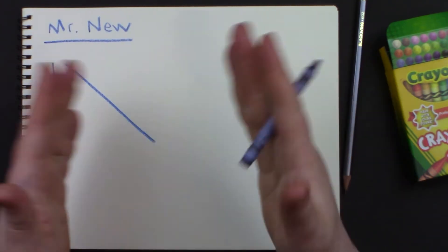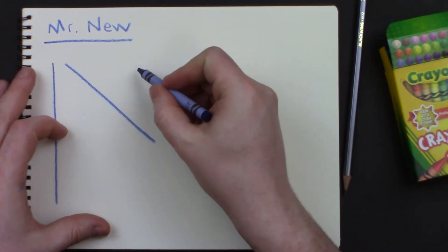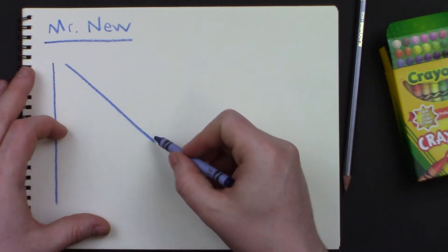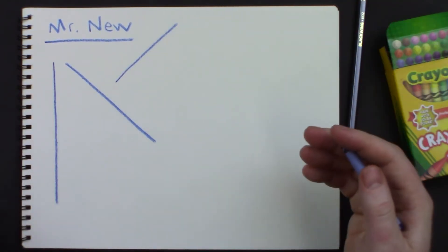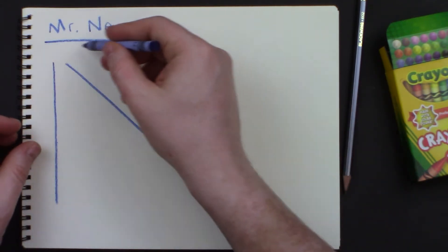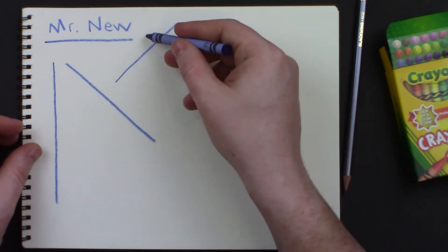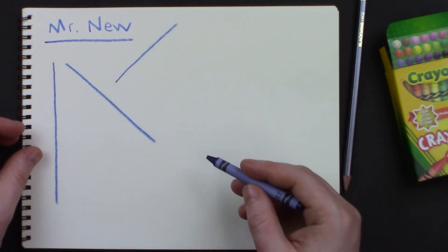Diagonals can go two different ways, like the letter X. So I've made a diagonal that goes this way. Why don't I also make a diagonal that goes the other way? So we have practiced together making some straight lines that go horizontal, vertical, and two different types of diagonal.